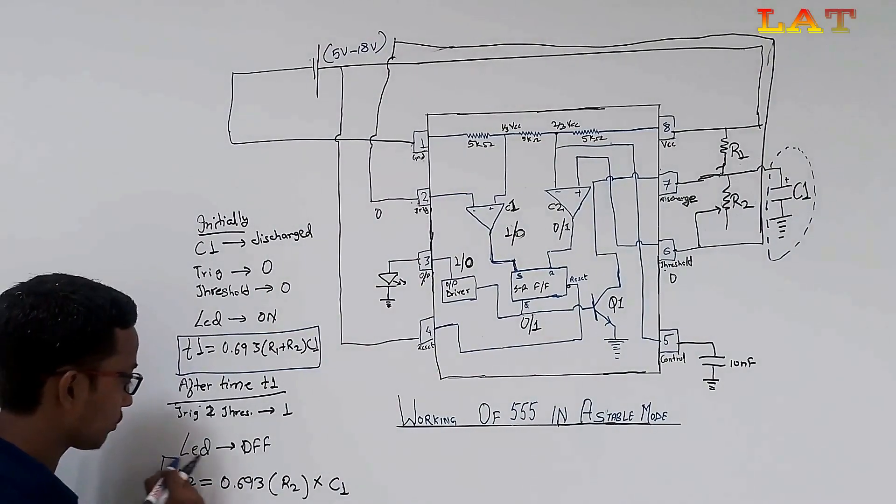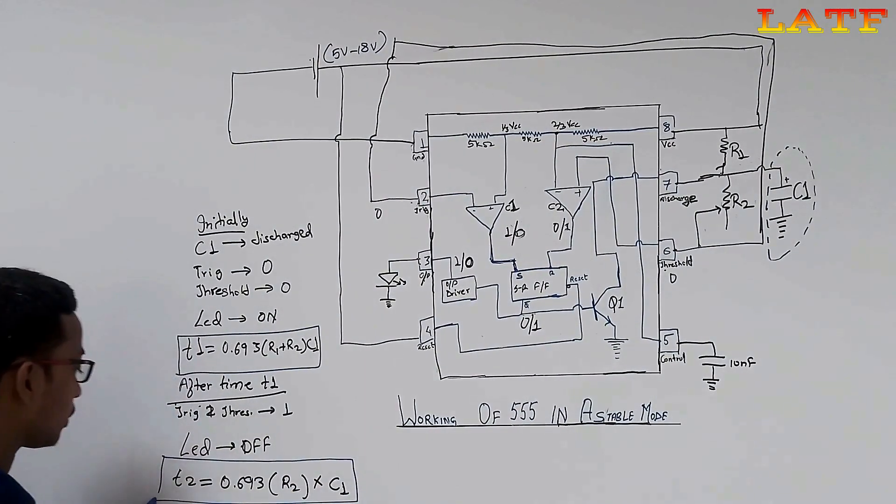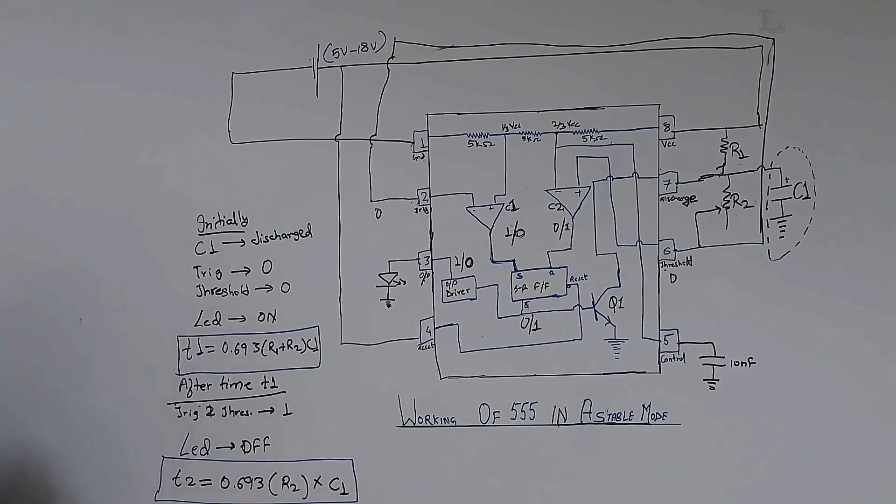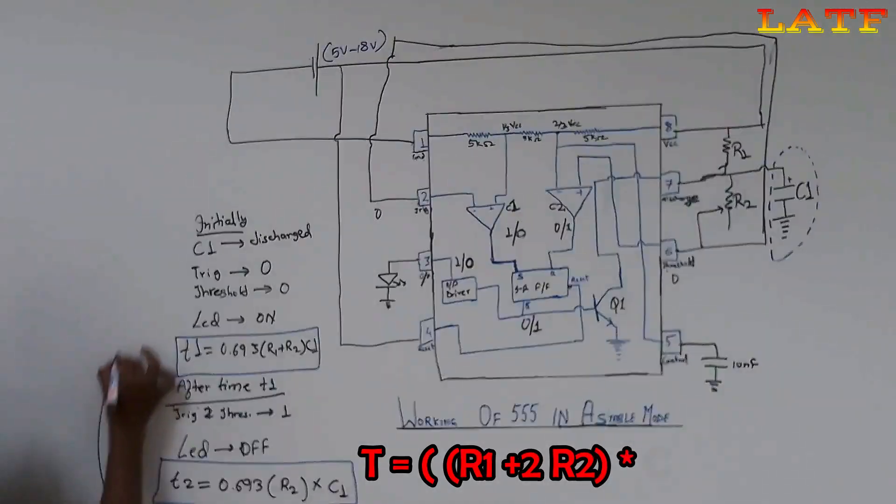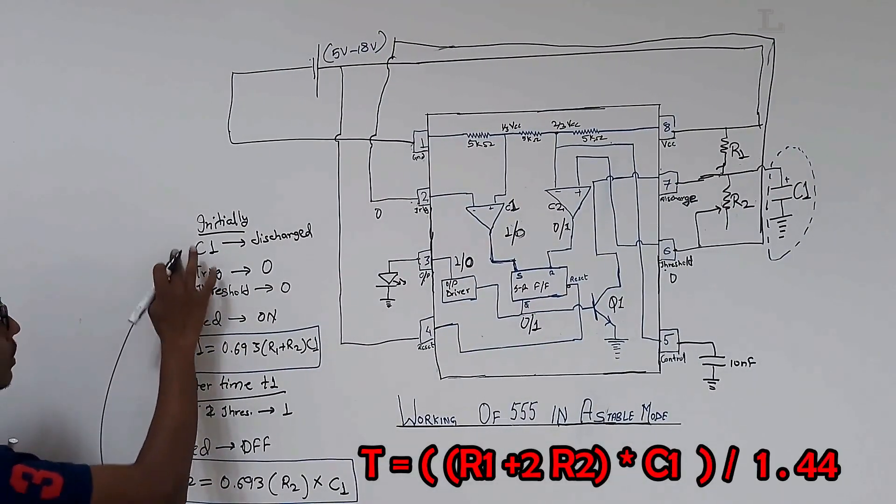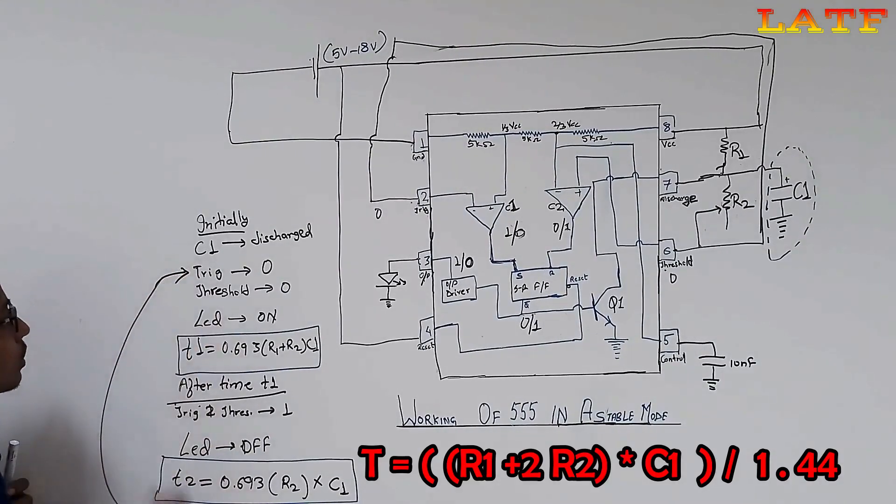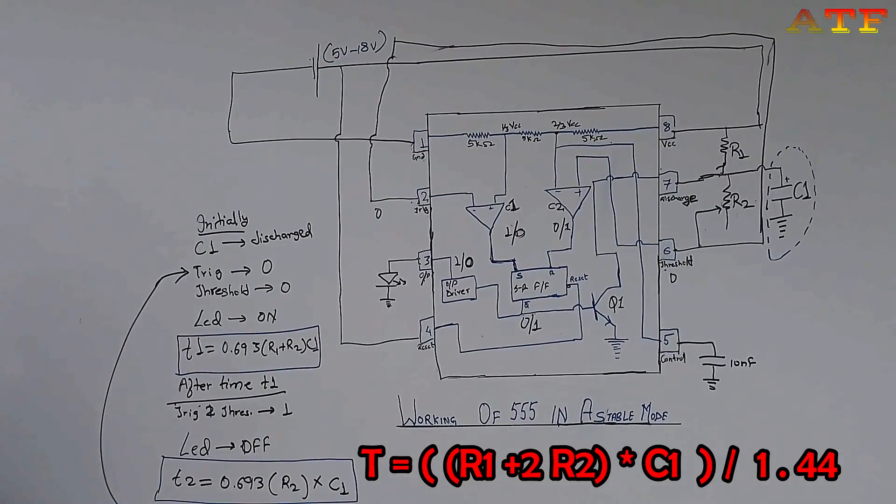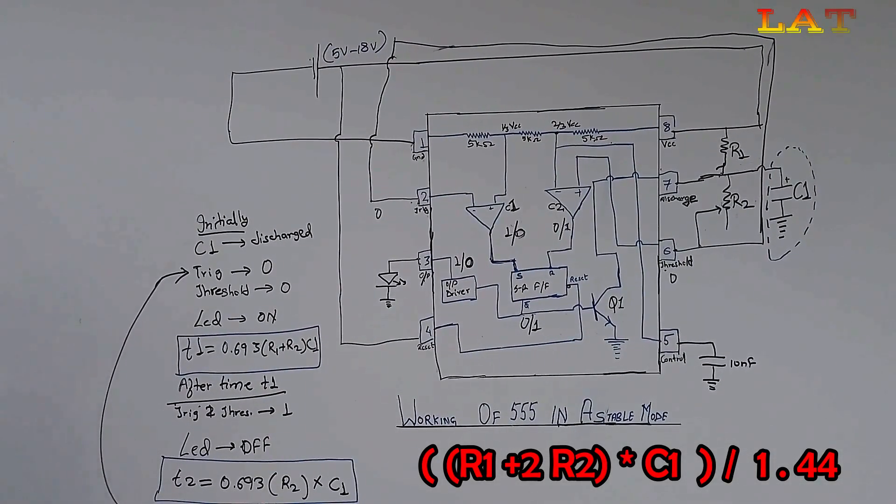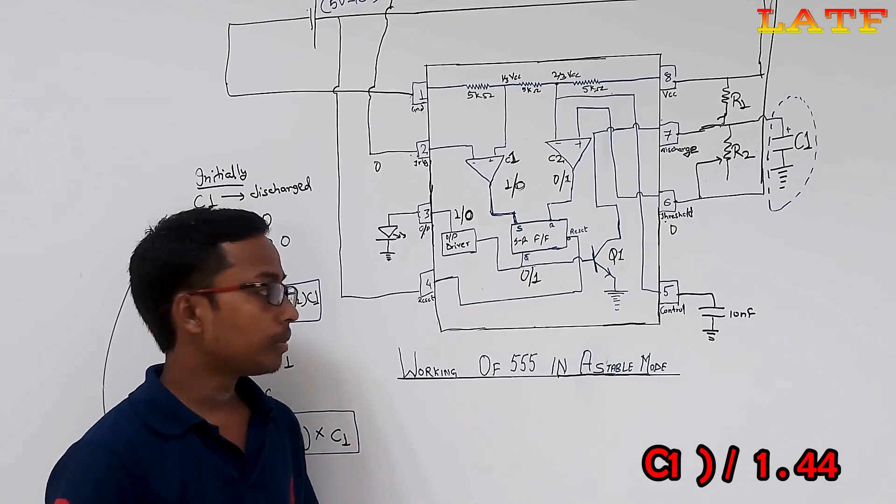This whole process is going to repeat after a time period of T. And, the time period T is T1 plus T2. From T1 and T2, we can calculate the time period and from time period we can calculate the frequency which is 1 upon time period.